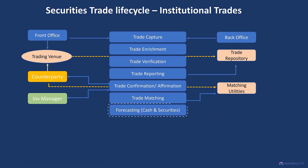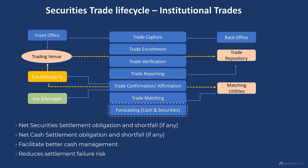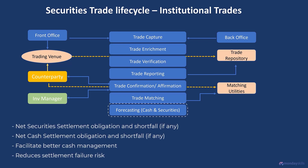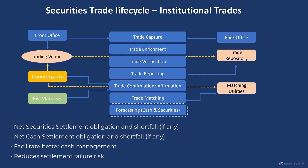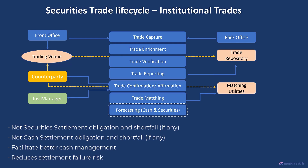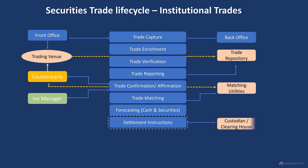The back office of the securities firm in parallel would forecast the securities or cash needed for settlement. If the securities are short, then the front office may borrow securities in the securities lending market or look at other means to meet the settlement obligations. If cash is short, then the securities firm will borrow or use a credit facility to fulfill the settlement obligations. The securities firm's back office will then send the settlement instructions to the clearinghouse or to the custodian, who in turn will send the settlement instructions to the clearinghouse.